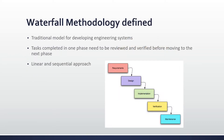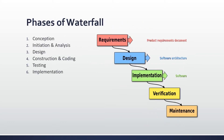Now let's talk about the waterfall methodology. Waterfall methodology is a traditional model of developing engineering systems, originally based on manufacturing and construction industry projects. When applied to software development, specialized tasks completed in one phase need to be reviewed and verified before moving on to the next phase. It's a linear and sequential approach where phases flow downward like a waterfall. The waterfall approach is highly sequential and broken down into several distinct phases, each following the other and needing to be completed one by one.